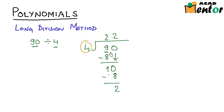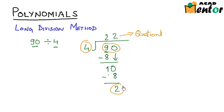The number at the bottom is the divisor, the number under the sign is the dividend, the number on top is called the quotient, and the number at the bottom after subtracting is the remainder. I hope we all remember this long division method for numerals.